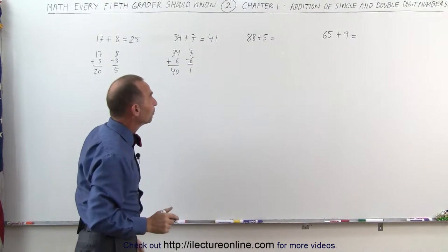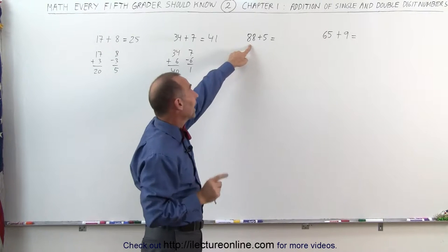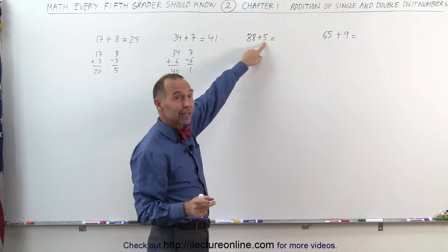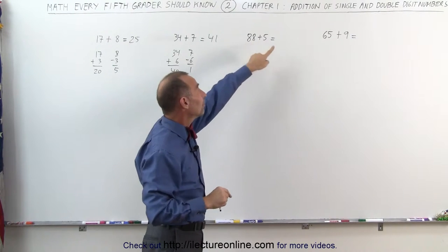88 plus 5. How much do I need to add to 88 to get 90? 2 more will give me 90. Take 2 away from 5, that gives me 3, and 90 plus 3 is 93.